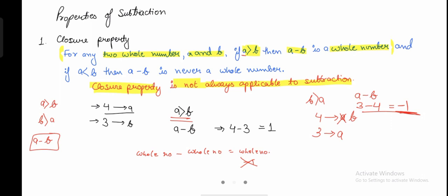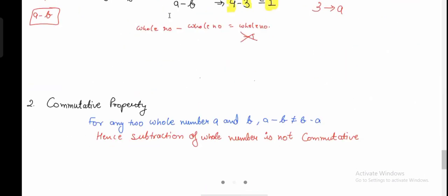If you were always getting a positive answer when subtracting, closure property would have worked. But here it does not, because subtracting one whole number from another can give either a positive or a negative answer. Let's move to the next property. I will give you a recap of all properties at the end. Our next property is the commutative property.